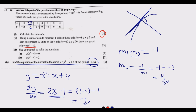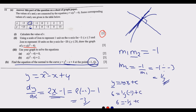With the gradient of the normal found as 1/3, use the linear equation y = mx + c. We know m = 1/3, and the point (-1, 6) lies on the normal. Substituting: 6 = (1/3)(-1) + c, so 6 = -1/3 + c, giving c = 6 + 1/3 = 6⅓.